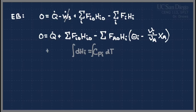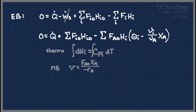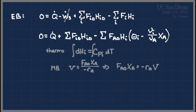The two forms of the material balance that feed into the energy balance both come from: V = F_A0·X_A / (−R_A). You can rearrange this as F_A0·X_A = −R_A·V. Sometimes the energy balance is written in terms of X_A; sometimes in terms of R_A and V. They are equivalent because of the material balance. If you're given a conversion and asked for a volume, you'll probably use the X_A form; if you're given a volume and asked for conversion, you'll likely use the R_A·V form.